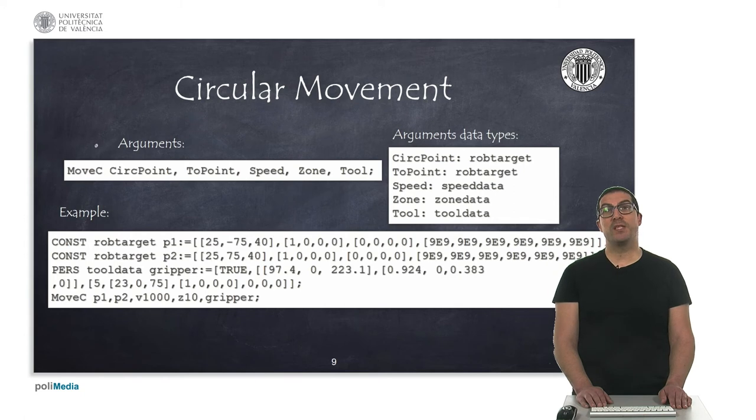The MoveC instruction defines a circular motion. The movement is defined from the current robot position, a middle point in the circle, and the target point. We only need to provide the middle circle point and target point, because the initial point is the current robot configuration.